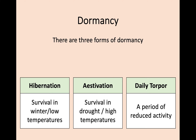In terms of both predictive and consequential dormancy, there are also three forms — three different ways you can go through dormancy. Hibernation, which you've probably heard of before, is survival in low temperatures, particularly in winter. Aestivation is the opposite — survival in either drought or high temperatures. So hibernation is cold, aestivation is hot or very dry. The third form is called daily torpor, which is a daily period of reduced activity, almost a micro-dormancy that takes place very often in organisms with a very high metabolic rate.